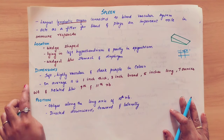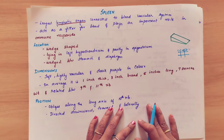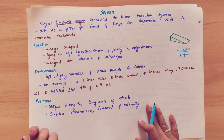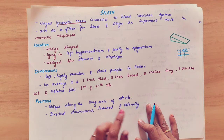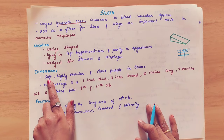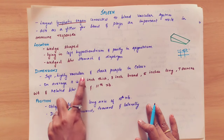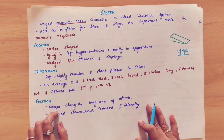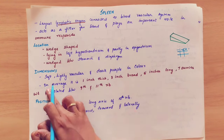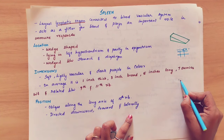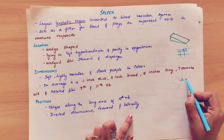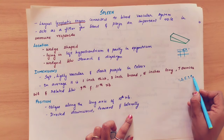Coming to the dimension. The spleen is very soft with a lot of blood supply, highly vascular and dark purple in colour. For the dimensions, we use odd numbers: 1, 3, 5, 7, 9, 11.